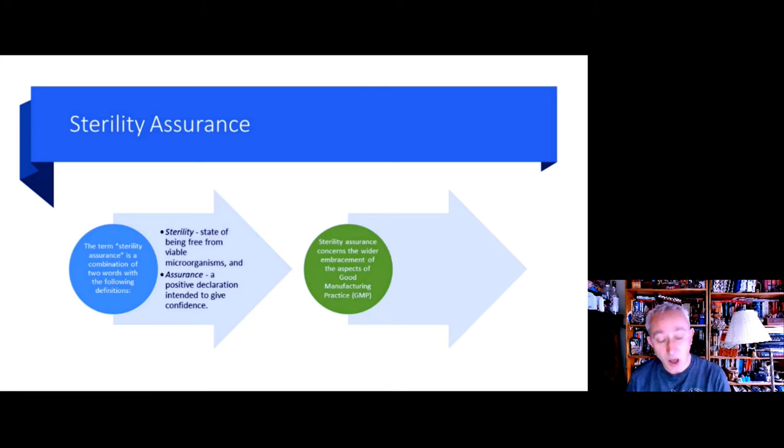Sterility assurance is the overall holistic review of all the various elements that go into making a sterile pharmaceutical product safe, whereas the sterility assurance level is a specific term that relates to a terminal sterilization process.